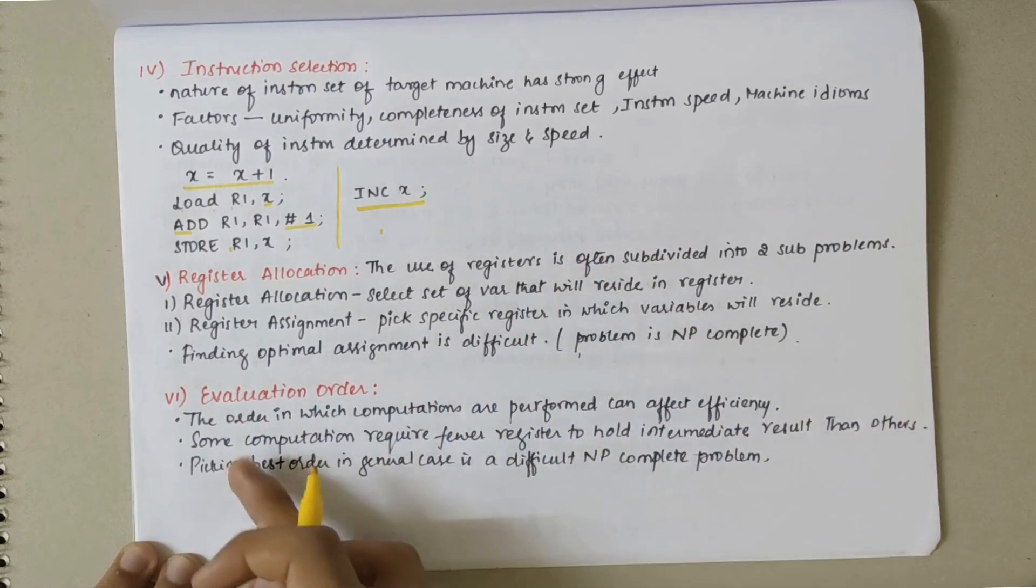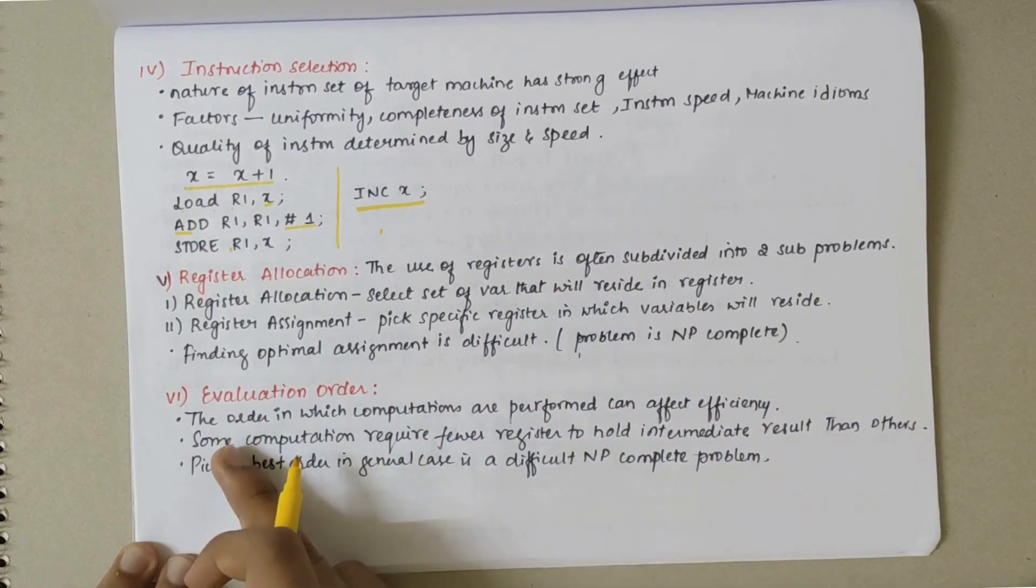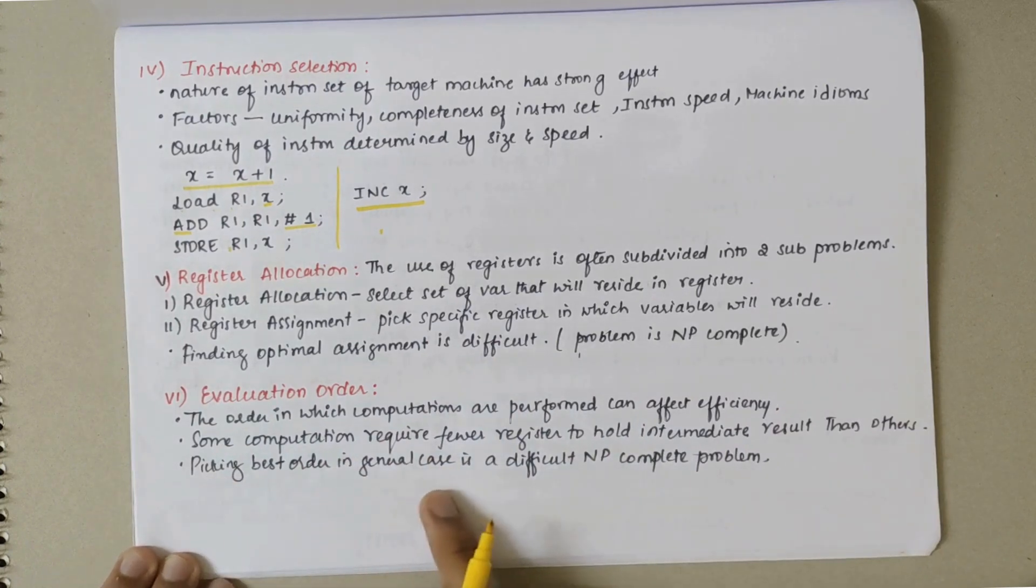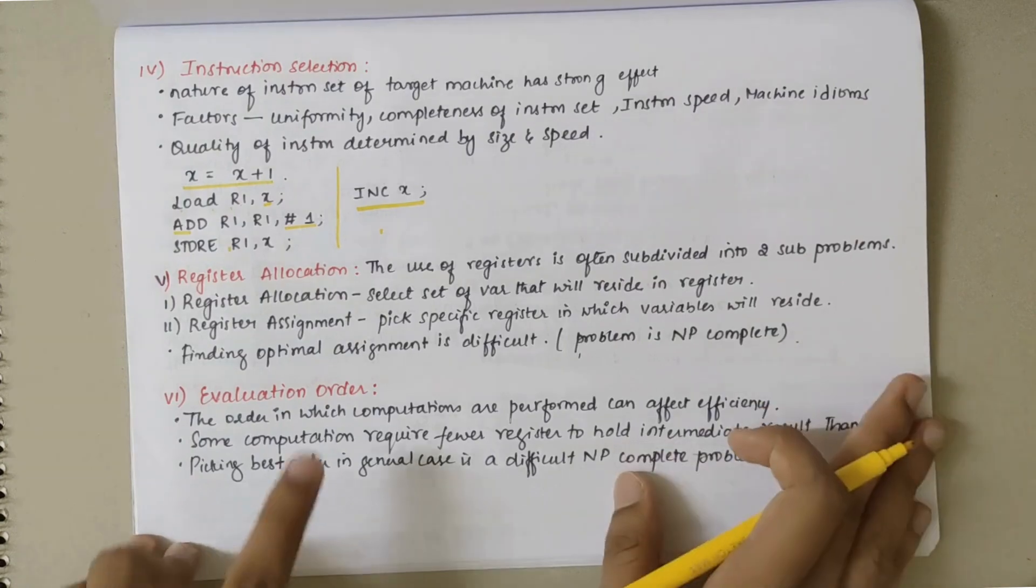In that case, the computations with lesser registers need to be evaluated first. Picking best order in general case is a difficult NP-complete problem.